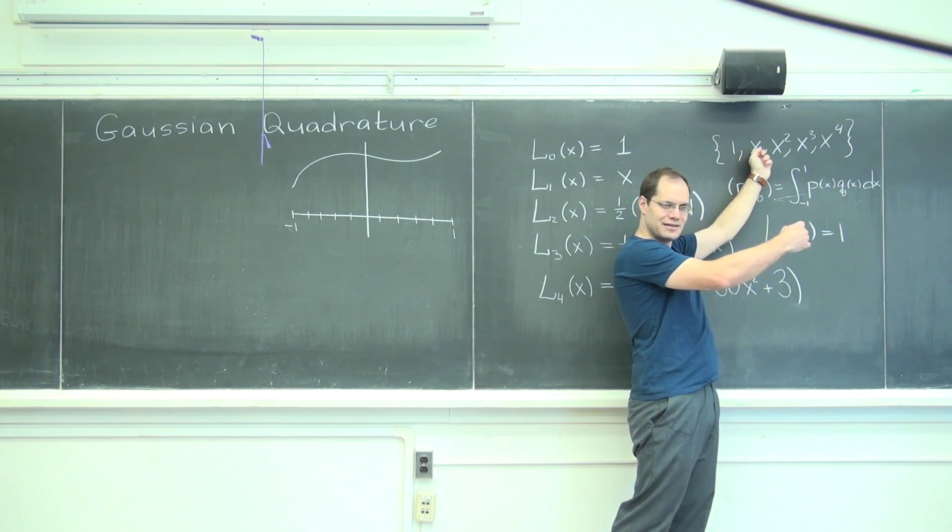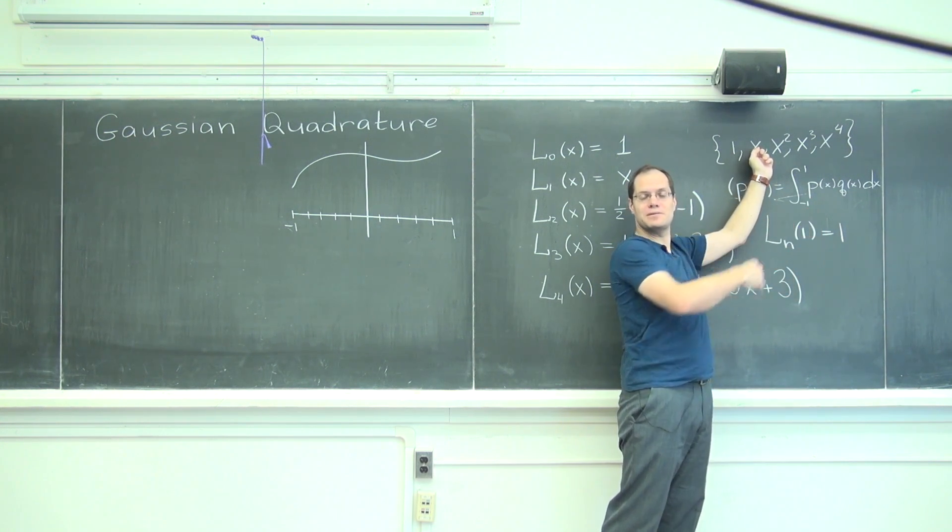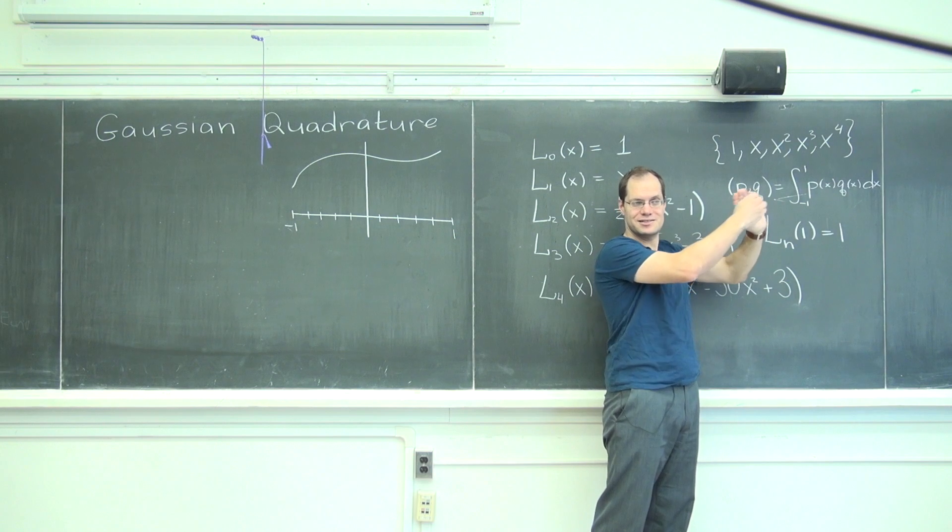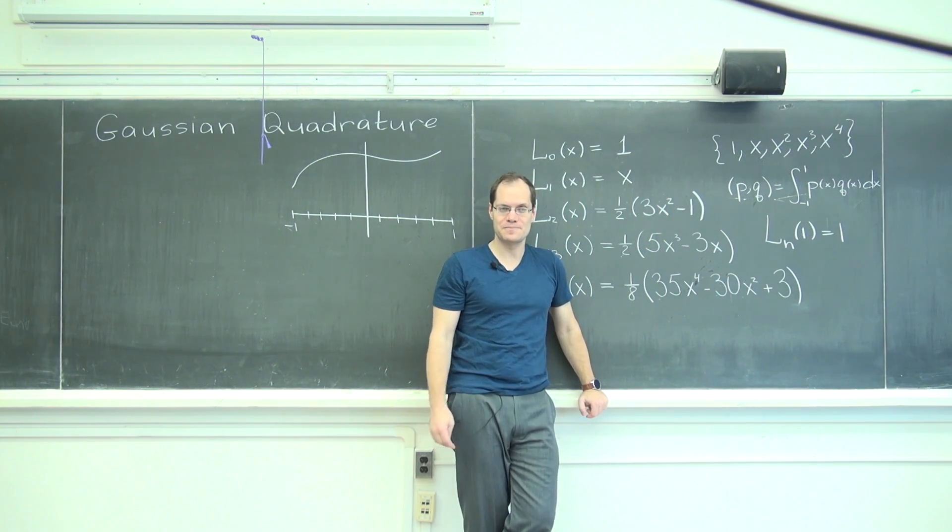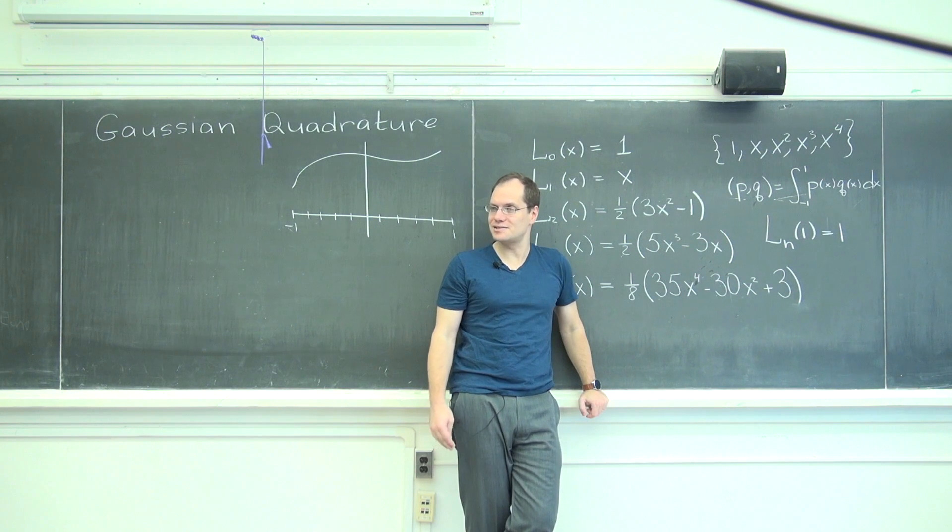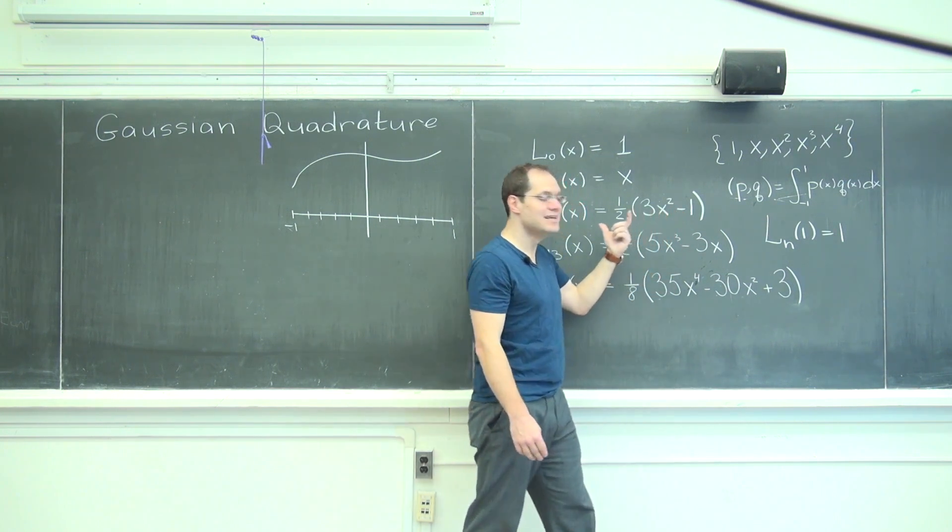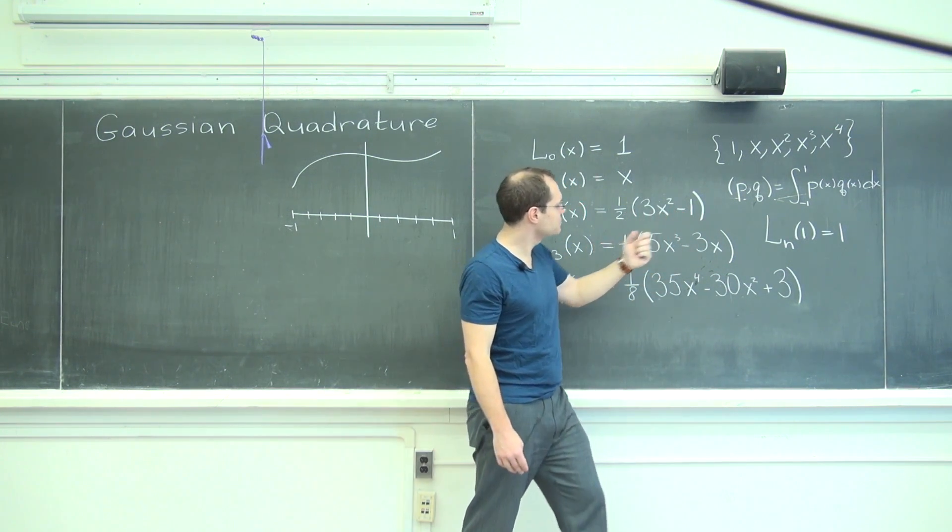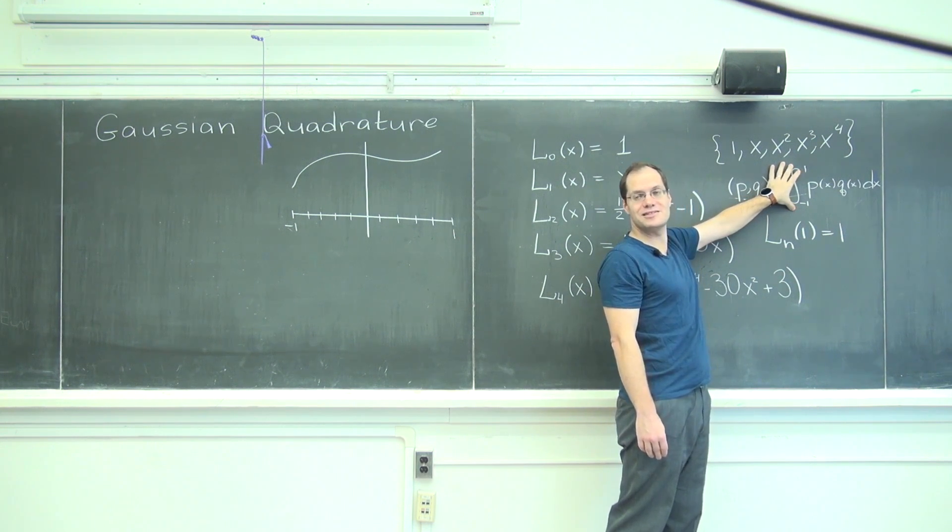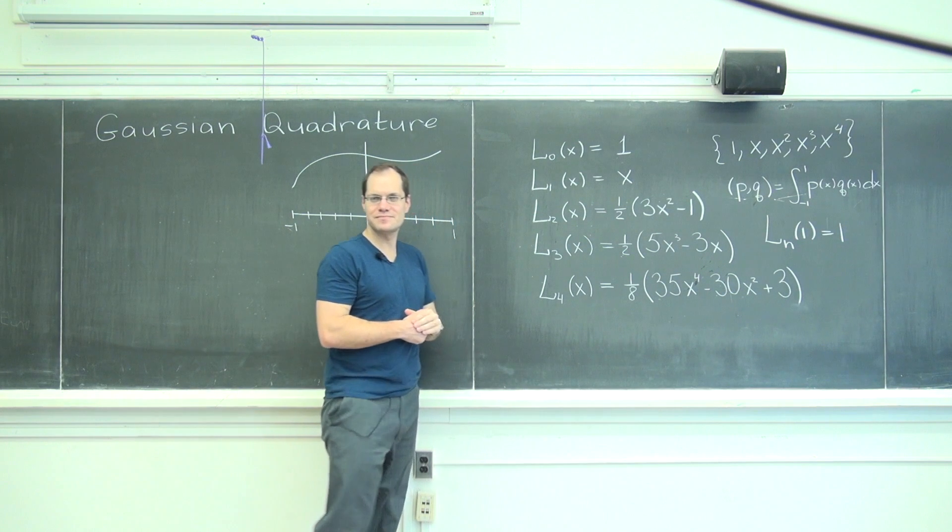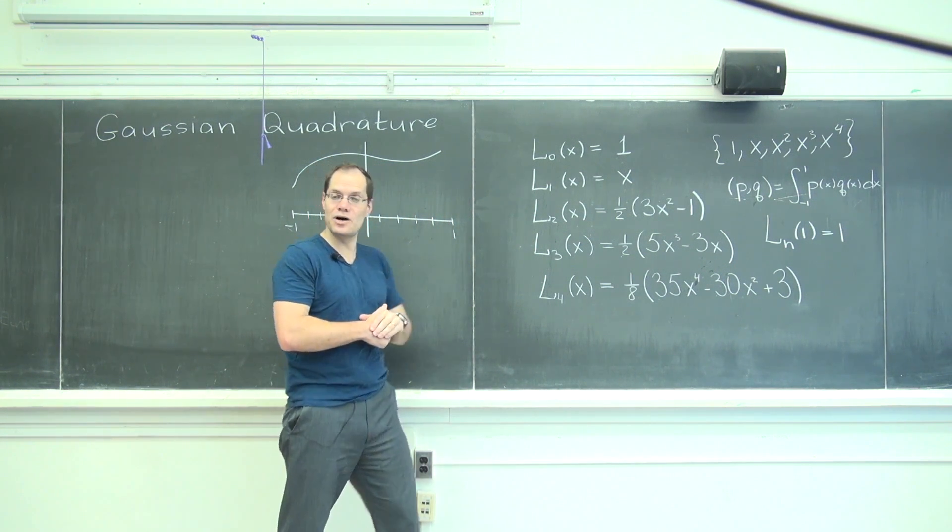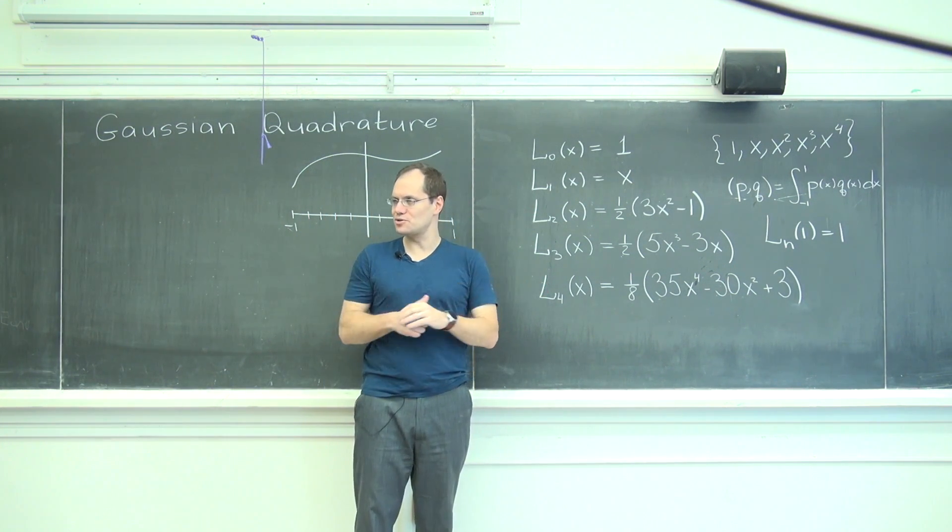When you perform the Gram-Schmidt orthogonalization procedure, the even ones are already orthogonal to all of the odd ones that came before it. So when you do that term in the Gram-Schmidt procedure, the multiple is zero so it drops out and the pattern persists. Why does it drop out? Because our interval of integration is symmetric, so odd functions integrate to zero.